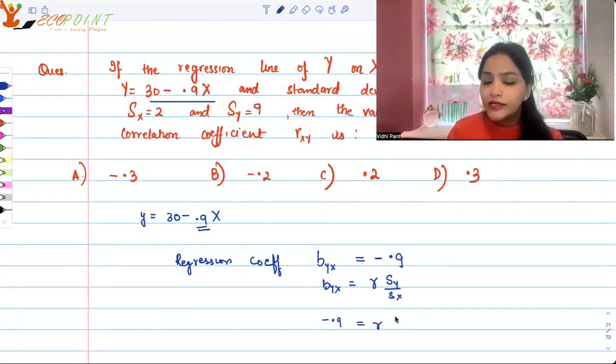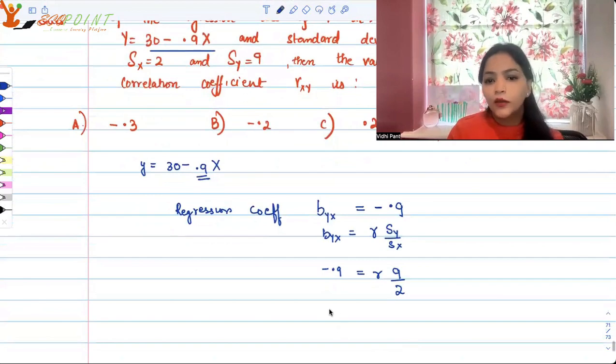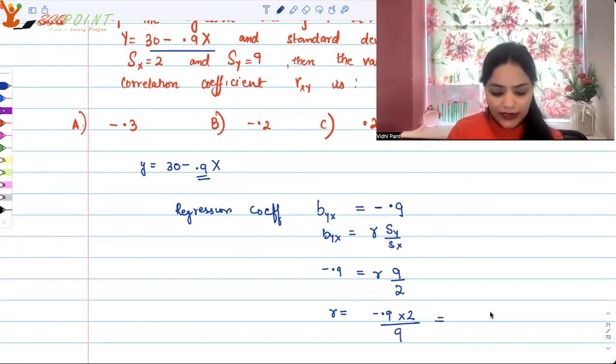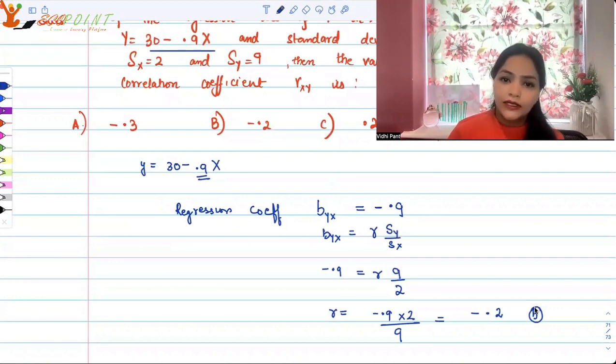R we don't have, but standard deviations we do have: 9 and 2. So from here we can easily find r. R is minus 0.9 times 2 upon 9, so that means it is minus 0.2. And we do have that option. Option B is clearly the correct option.